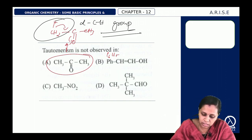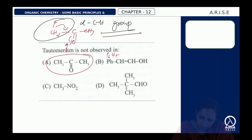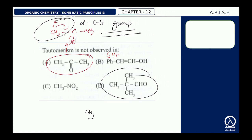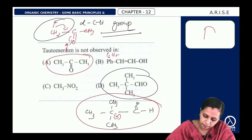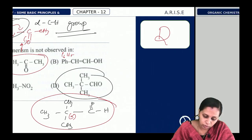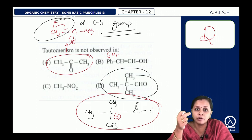The condition for tautomerism: the compound must contain an alpha hydrogen (the carbon next to the functional group must have a hydrogen). Even if an alpha hydrogen is present, tautomerism will not occur if the compound does not produce a stable enol form.